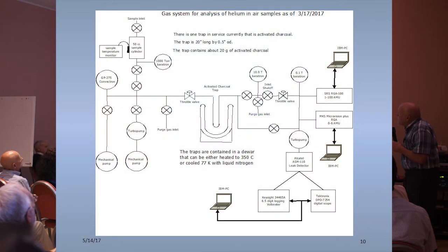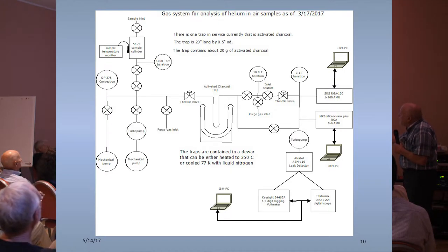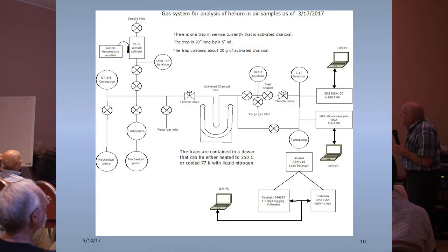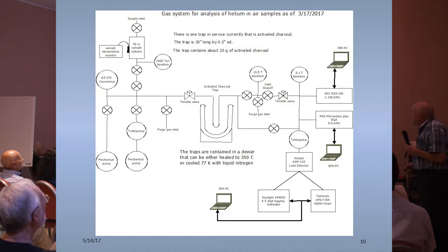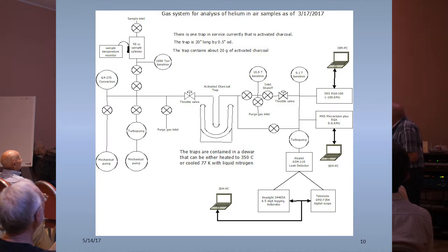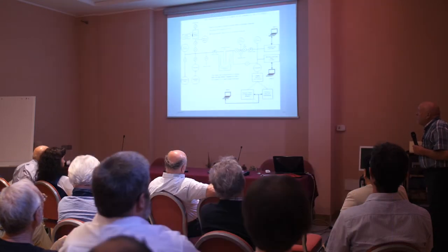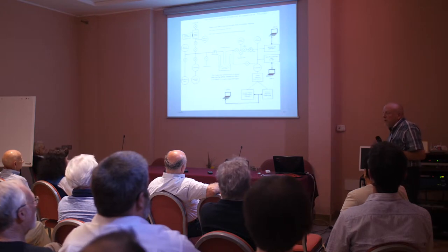We made some more improvements. Perhaps the most important was we now measure the temperature of the sample and have a high-precision pressure gauge that measures the actual pressure, so we accurately know how many moles of the sample we're injecting. We also added an MKS Microvision RGA, which only goes from zero to six mass units, and so it has the resolution to be able to separate helium and deuterium. The third thing we added was a Keysight six-and-a-half-digit digital logging voltmeter, which puts data out into an Excel file directly so you can do the analysis however you want.